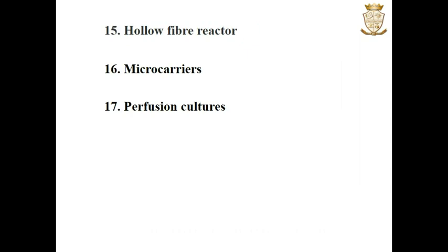Three types of bioreactors — the hollow fiber reactor, microcarrier, and perfusion culture — are used for the cultivation of animal cells. In hollow fiber reactors, cells are immobilized on the external surfaces of hollow fibers while nutrients pass through the interior of the fibers; this is used for the cultivation of anchorage-dependent cells. In microcarriers, small beads of DEAE-dextran are used, and anchorage-dependent cells are grown on the surface either as monolayers or multilayers. Perfusion culture is a technique where gentle stirring is provided and the broth is continuously withdrawn and passed through a filter to separate cells from the medium; this is also known as spin culture since the filter is gently spun to prevent cell blocking.